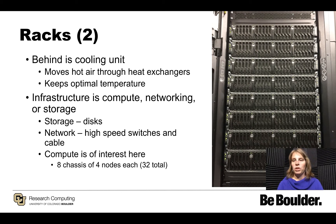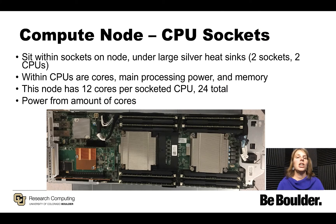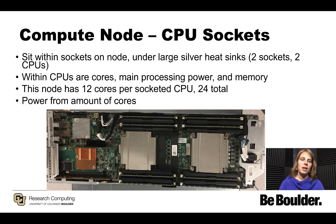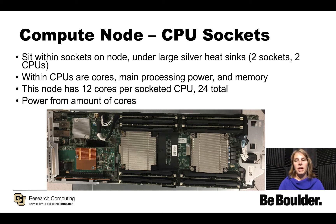In the picture here, we're looking at eight chassis that contain four nodes each, which means we have 32 nodes total on the system. So what are nodes? Let's take a look at what a compute node is. There are two main components on a compute node: the socketed CPUs and memory. The socketed CPUs sit within sockets on a node under large silver heat sinks. In this picture we see two large silver heat sinks, two sockets, and each one has a CPU.